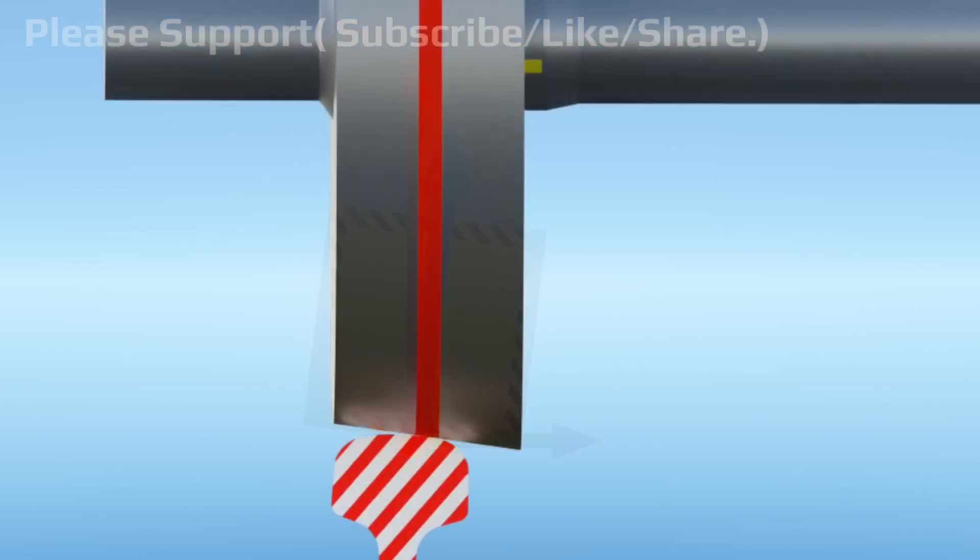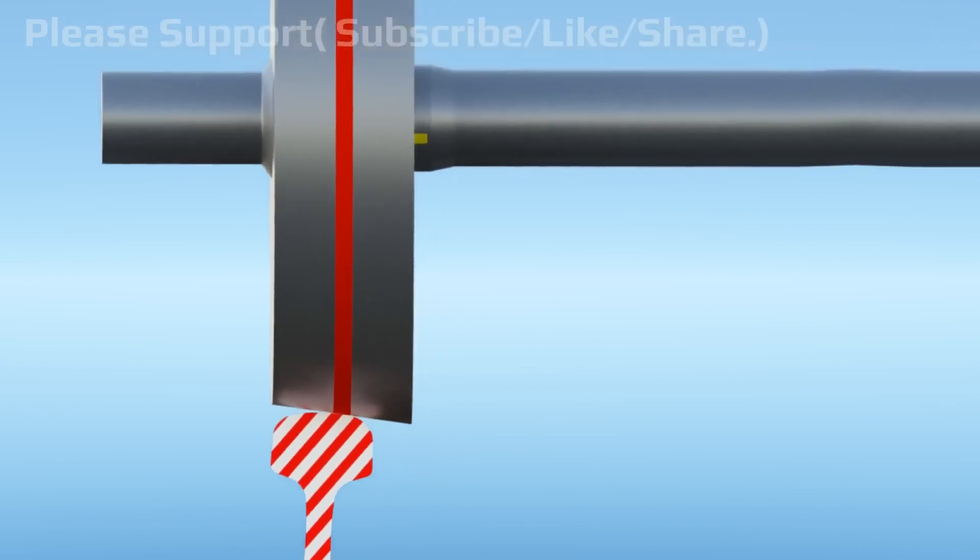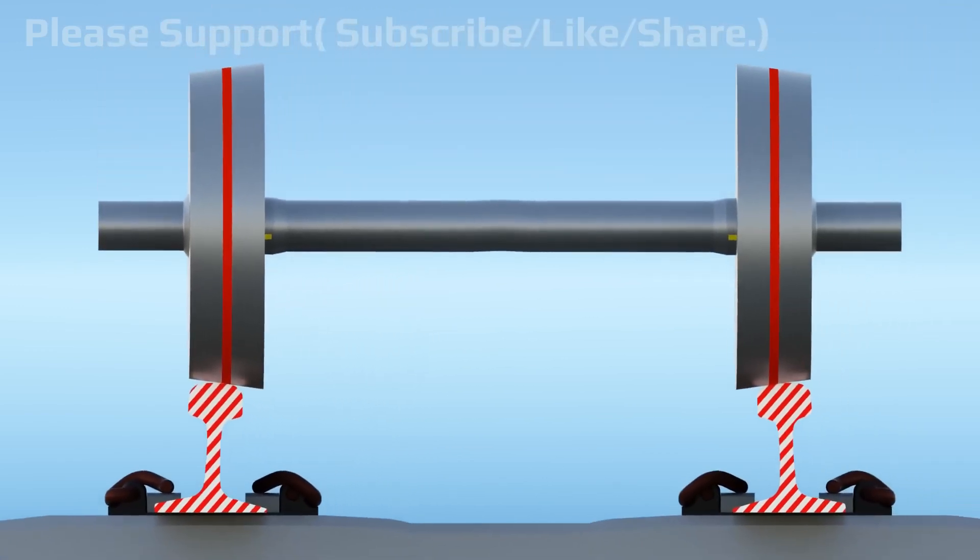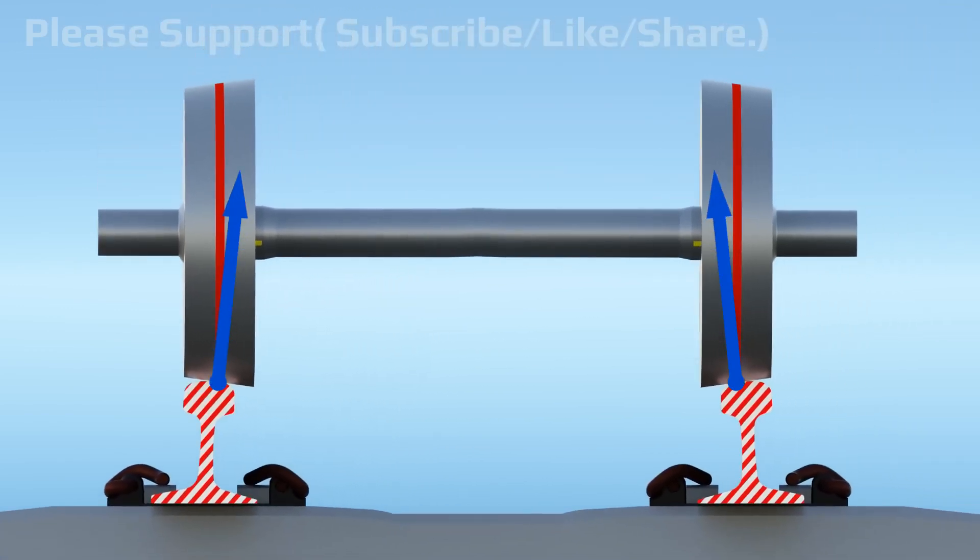Similarly, at rail and wheel contact points, reaction forces will be inward. We can divide it into two components: one is horizontal component, other one is vertical component.